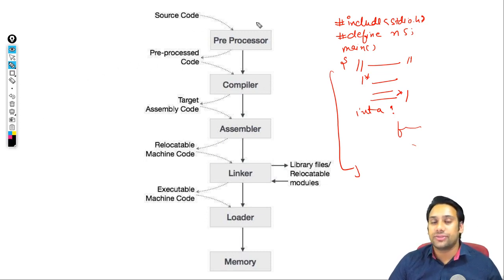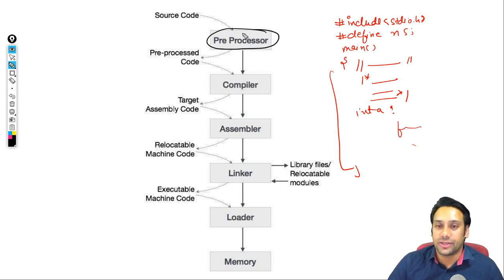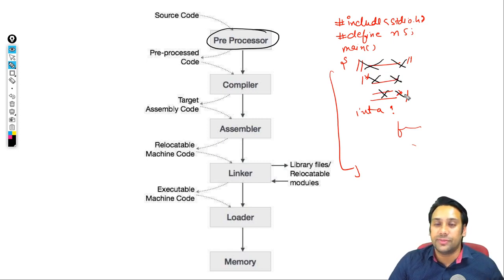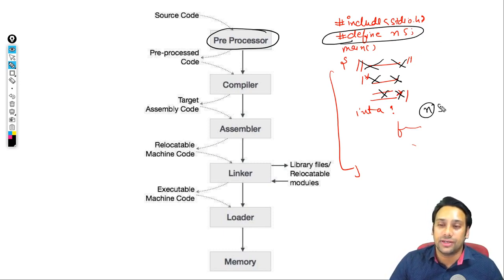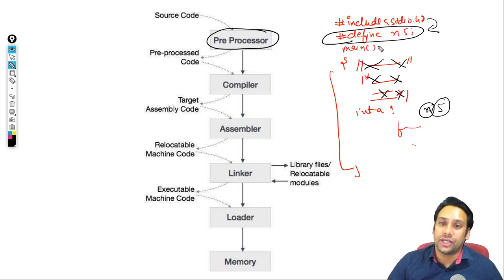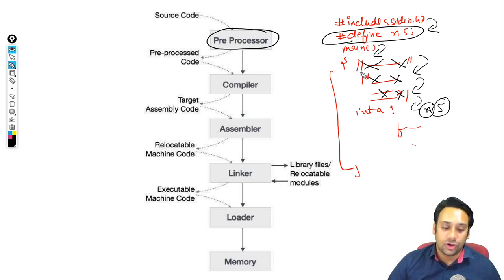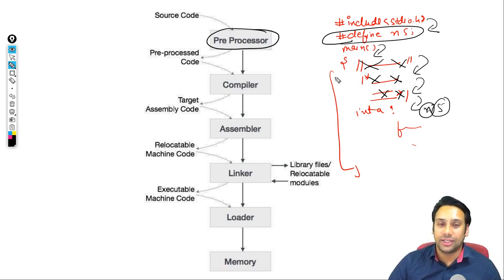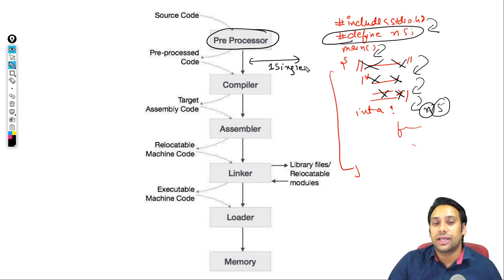So when we execute the program, we first give it to the pre-processor. The pre-processor removes all unnecessary comments, resolves all hash define statements — replacing n with 5 wherever it was used — and removes all new lines and unnecessary spaces. After the pre-processor, the entire program becomes a single line program.